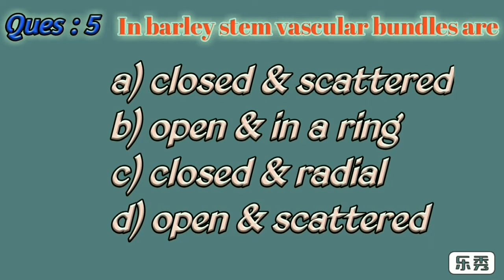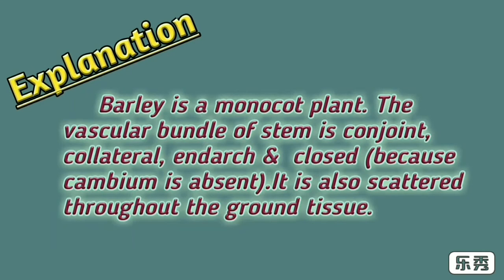Fifth one. In barley stem, vascular bundles are: A) closed and scattered, B) open and in a ring, C) closed and radial, D) open and scattered. Here A, closed and scattered, is the right answer. Barley is a monocot plant. The vascular bundle of the stem is conjoint, collateral, endarch, and closed. Because cambium is absent, it is also scattered throughout the ground tissue.